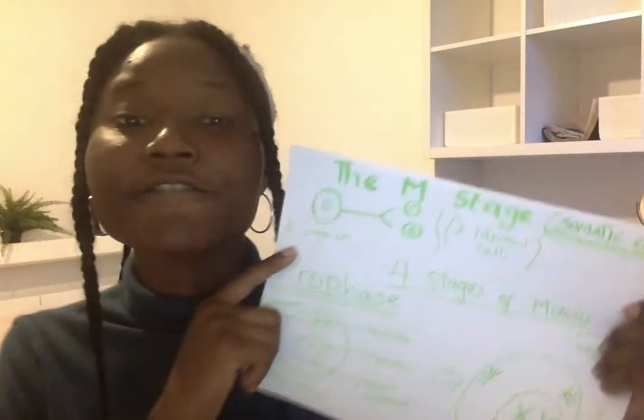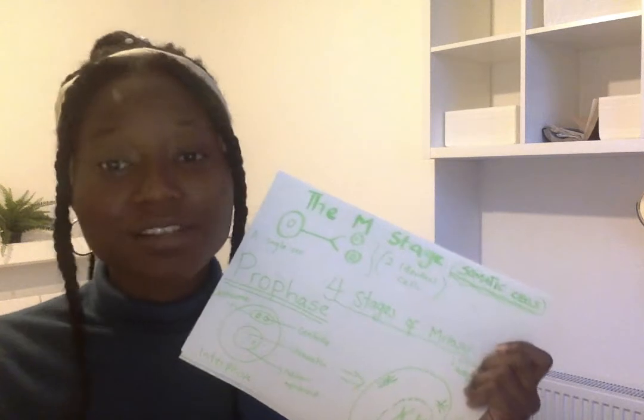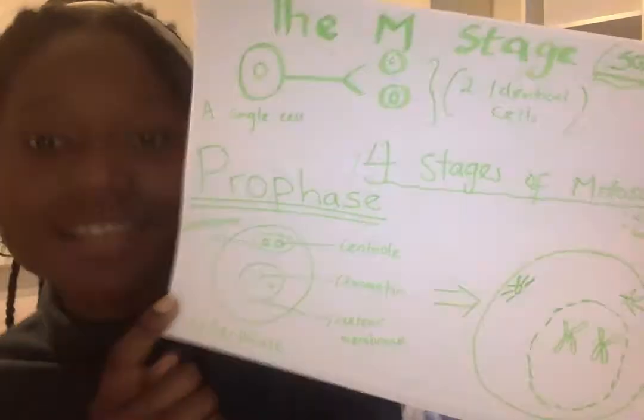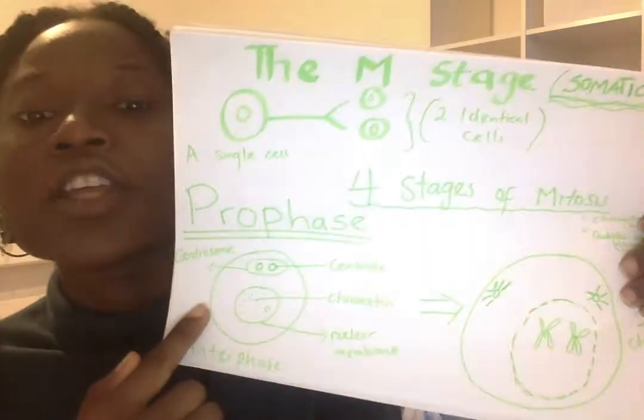Now we'll go into mitosis. Mitosis has four stages. Remember the cell cycle: G1, S, G2 - the three of them are collectively interphase - then next you have mitosis. In your mitosis stage there are four stages: you have your prophase, your metaphase, your anaphase, and your telophase.